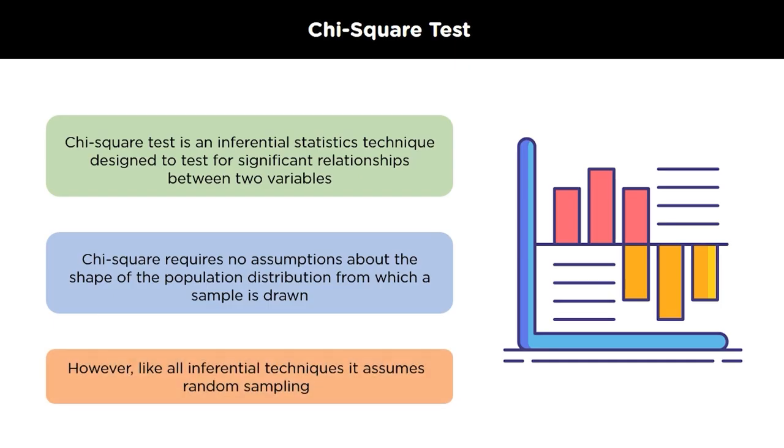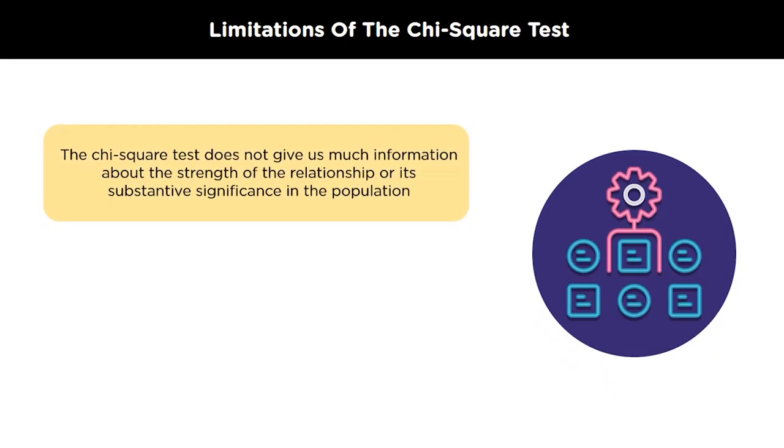However, like all inferential techniques, they assume random sampling. The chi-square test does have some limitations. Firstly, the chi-square test does not give us much information about the strength of the relationship or its significance in the population.